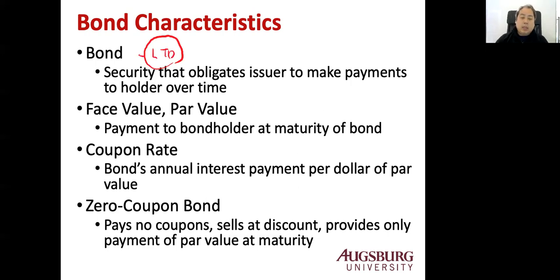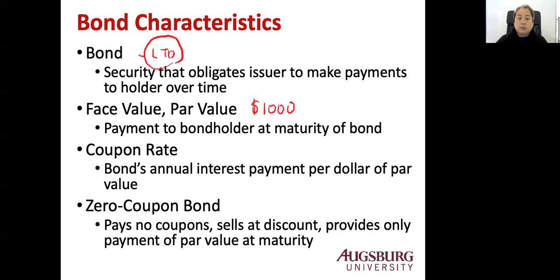Each bond has a par value, also called face value. This is the payment to the bondholder at maturity of the bond. So if the bond is a five-year bond, then after five years you're going to receive the par value or face value. In the United States, corporate bond face value is always $1,000. Sometimes you don't see this face value in the question, then you just assume it is $1,000.